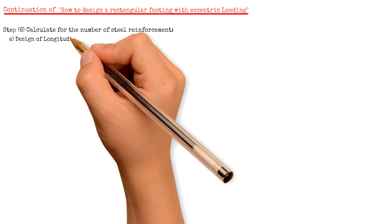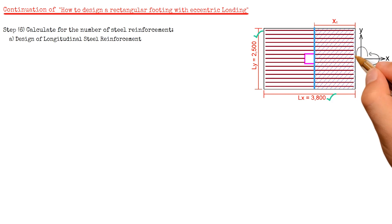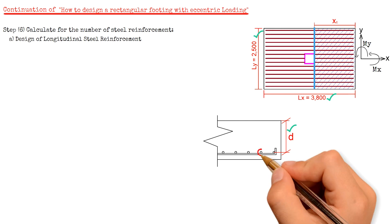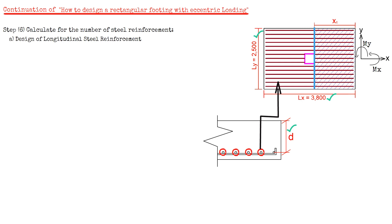We will begin with the design of longitudinal steel reinforcement. In this diagram, we have a length Lx equals to 3800 mm and length Ly equals to 2500 mm. The critical section for flexure occurs at the face of the column. The bending moment in each direction of the footing must be checked and appropriate reinforcement provided. In rectangular footings, the bending moments in x and y directions are different. The depth of the footing in each direction should be considered, since the bars in one direction rest on top of the bars in the other direction, so the effective depth d varies with the diameter of the bars used. The longitudinal steel reinforcement, as shown in the diagram, rests on top of the other reinforcement and is parallel to the longer direction.